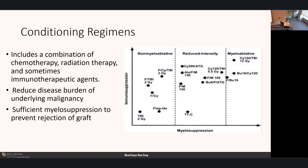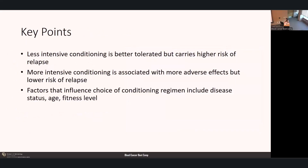Myeloablative conditioning is very intense—it eliminates nearly all host bone marrow cells and causes irreversible pancytopenia unless hematopoiesis is restored by stem cells. This is typically reserved for younger patients under 55 and fit patients able to tolerate intensive treatments. Somewhere in the middle is reduced intensity conditioning, which causes prolonged cytopenias requiring stem cell support. Key points: less intensive conditioning is better tolerated but carries higher relapse risk; more intensive conditioning has more adverse effects but lower relapse risk. Factors influencing choice include disease status, age, and fitness level.